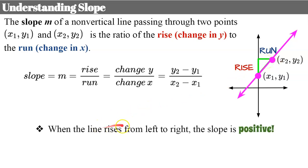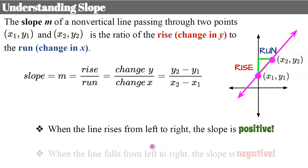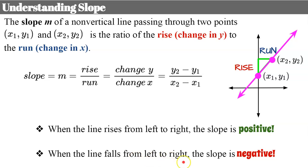When a line rises from left to right — as we read a graph from left to right, just like a book — the slope is positive. When the line falls from left to right, the slope is negative.